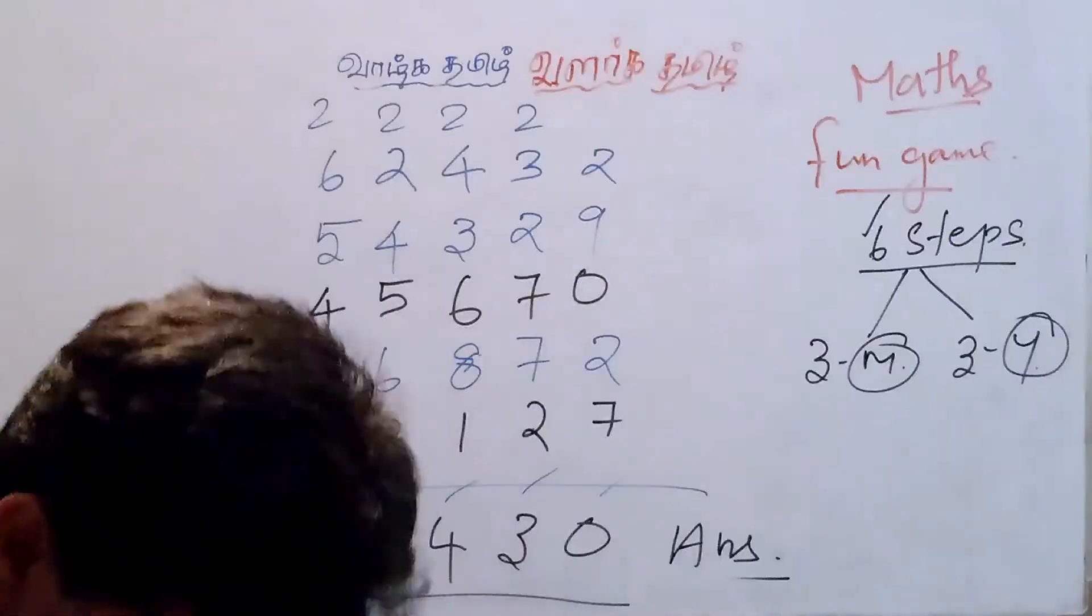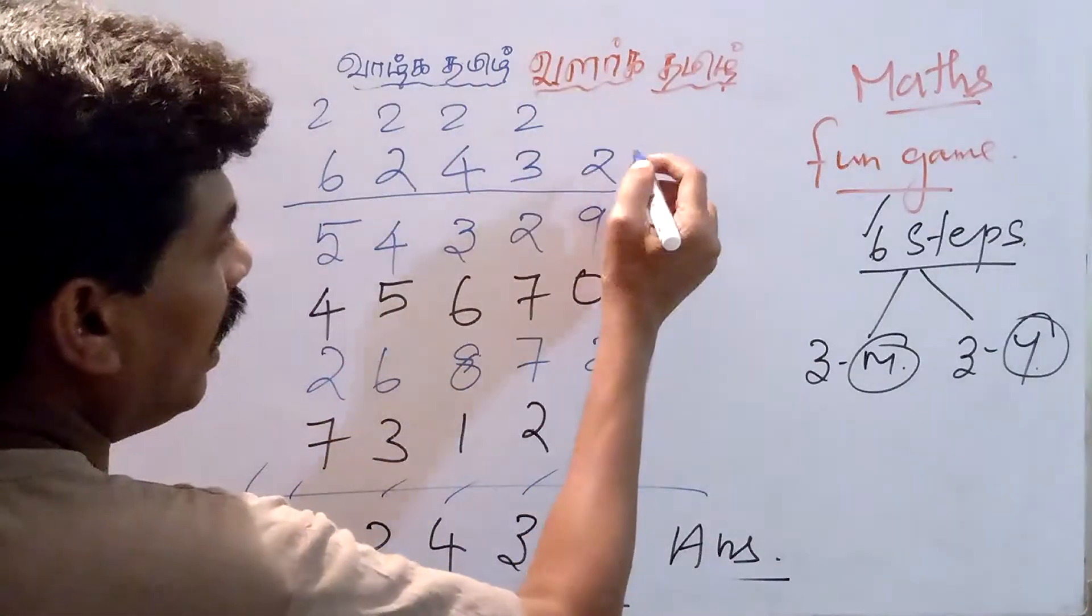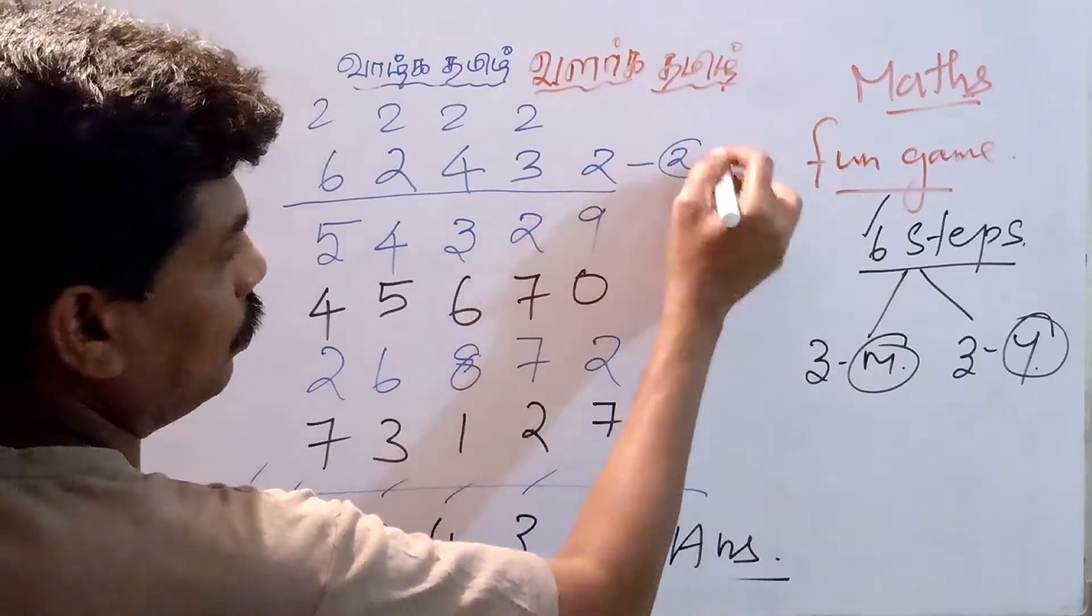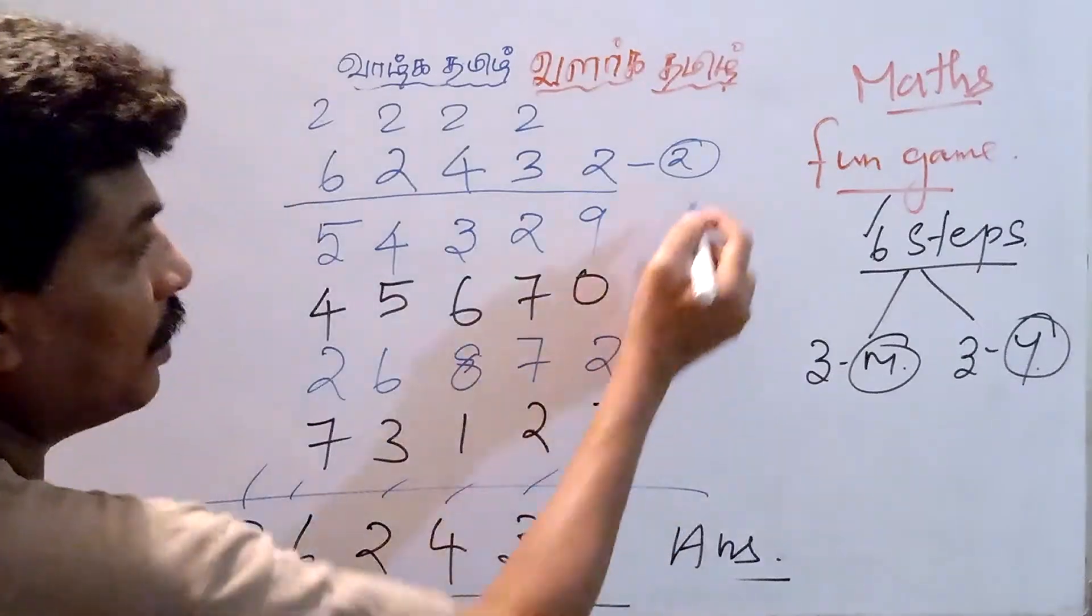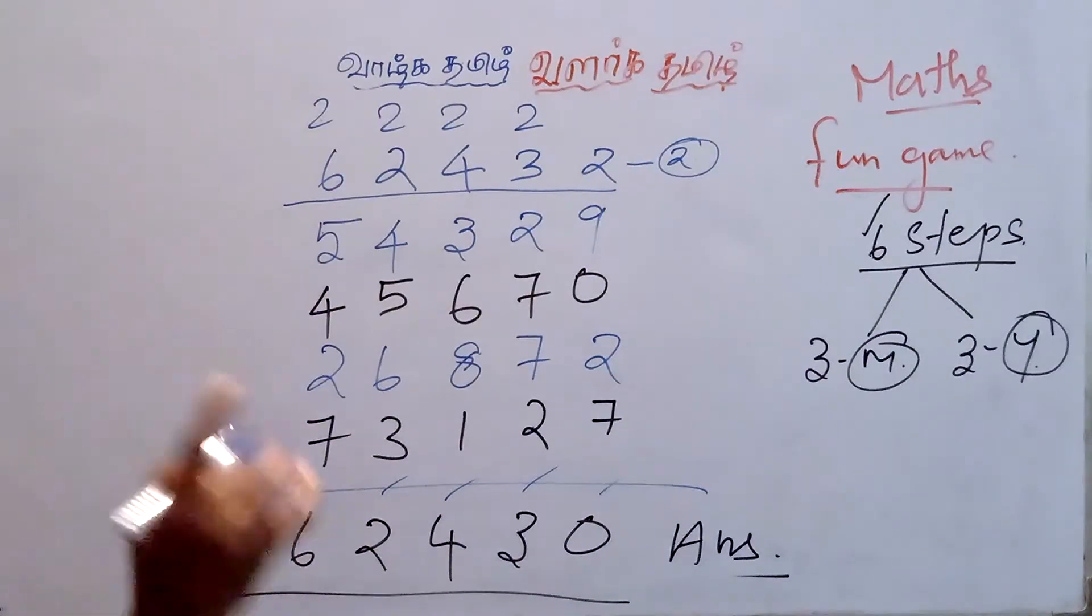How to do the steps? I will explain to you. This is your number. Now minus 2. Minus 2 means the answer is 0. These two you can write first. This is the first step.